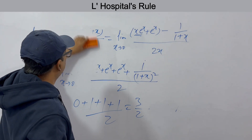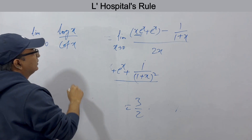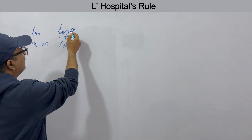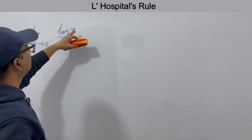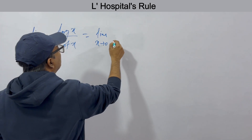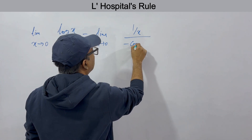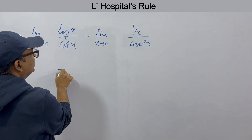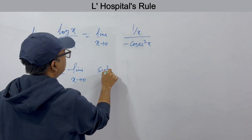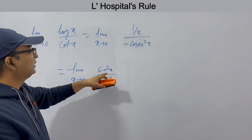Let us see one more example: limit x→0 of log(x) / cot(x). When you put x = 0, log(x) → −∞ and cot(x) → ∞, so this is an infinity by infinity form — again an indeterminate form, and you apply the same rule. Taking the first derivative: derivative of log(x) is 1/x, and derivative of cot(x) is −cosec²(x). Rearranging, this becomes sin²(x) / x. When you put 0, this is 0 by 0 form — it has come from ∞/∞ down to 0 by 0.